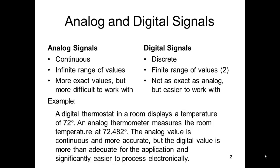So let's give an example. A digital thermostat in a room displays a temperature of 72 degrees. An analog thermometer measures the room temperature at 72.482.